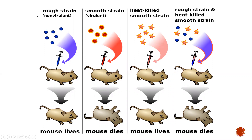Step number two: Griffith injected a different, non-capsulated strain of Diplococcus pneumoniae into mice. Nothing happened to the mice. In this case, Griffith concluded that this rough strain is the non-pathogenic, non-virulent strain.